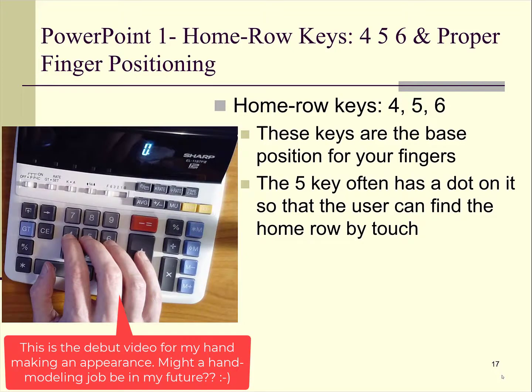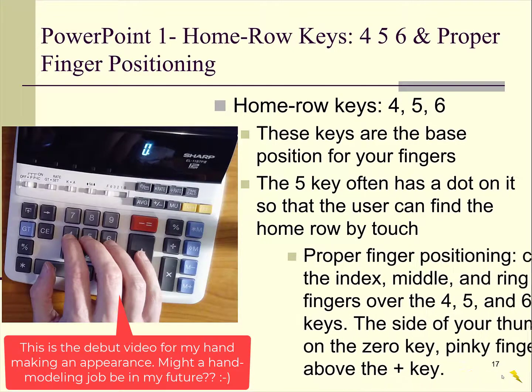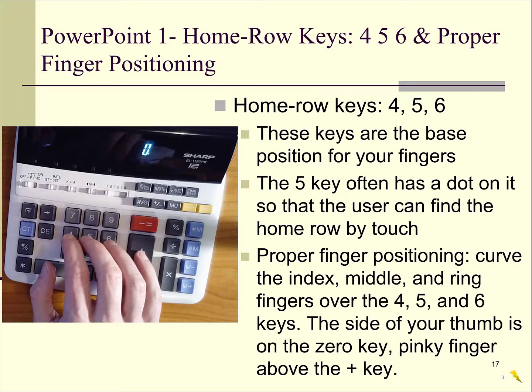So here's an image of the proper finger positions. Notice the fingers are curved, and the index finger, your pointer finger, is over the 4. Your middle finger is over the 5, and you can feel the bump. And your ring finger is over the 6. The side of your thumb is on the 0 key, and your pinky finger is above the plus key.